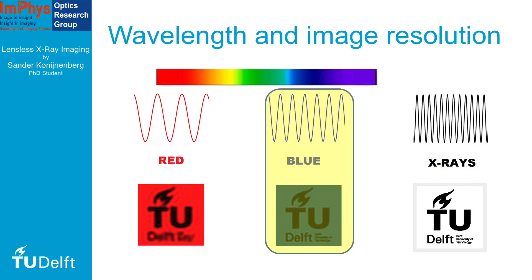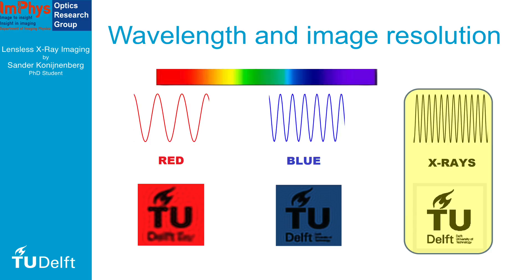You may wonder, why not use even shorter wavelengths such as x-rays to see even smaller details? The problem is, for such short wavelengths we simply don't have lenses good enough to create a good image. Thus, we need to find a way to create an image without using lenses.